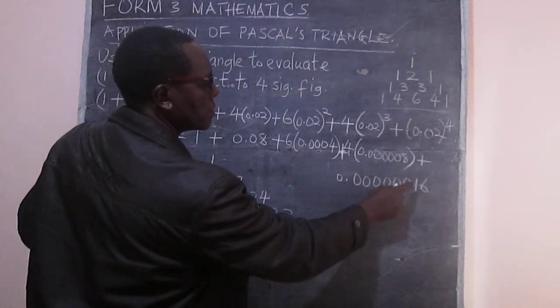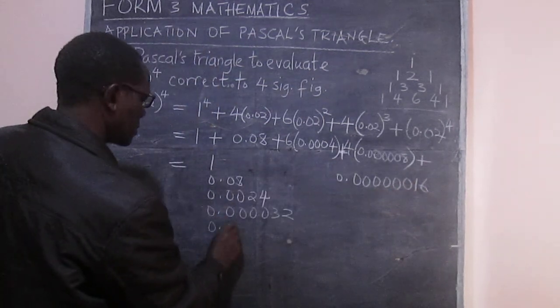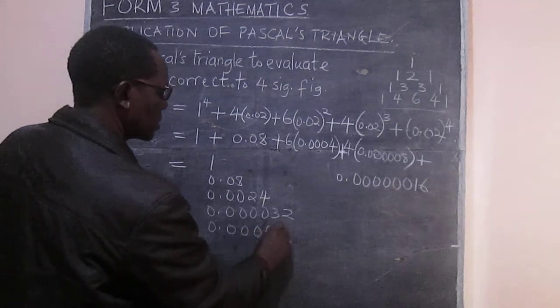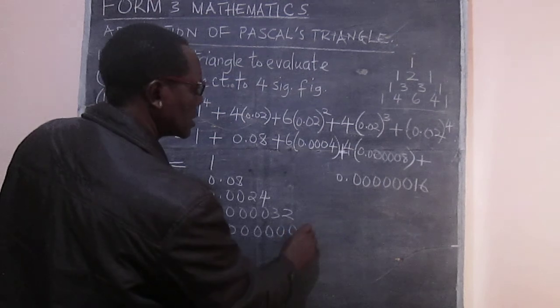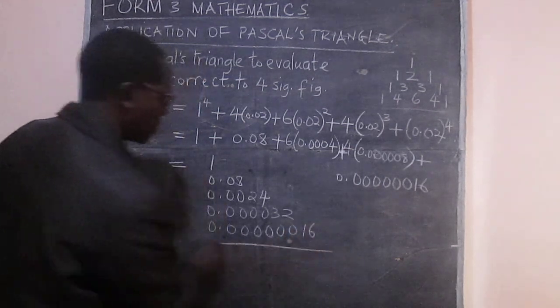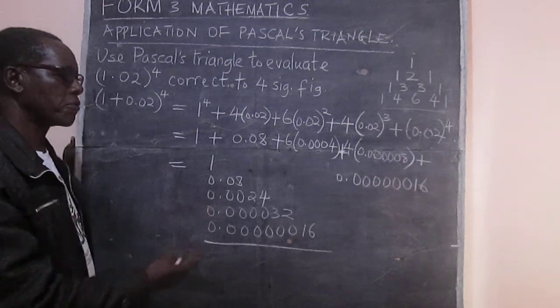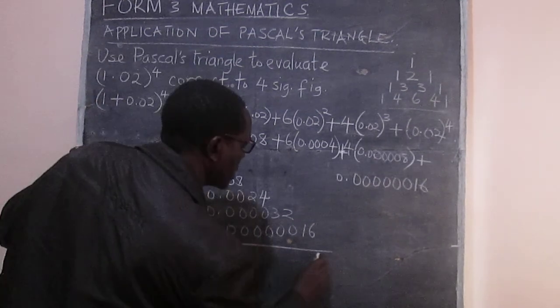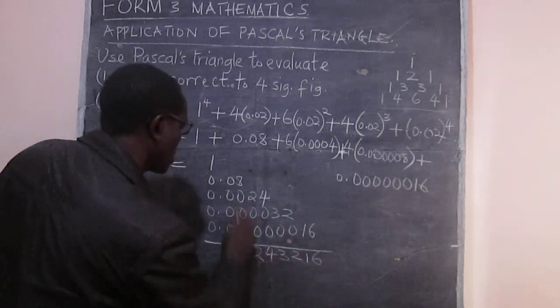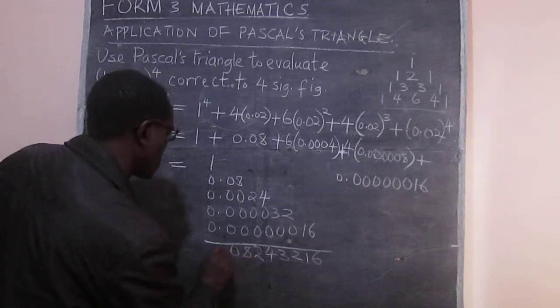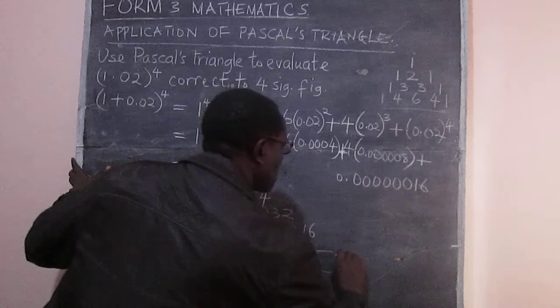Although there is actually no harm in adding it. So we have 0.00000016. And we can add these up and then round off. So that we have 1.08243216, and this is approximately equal to...